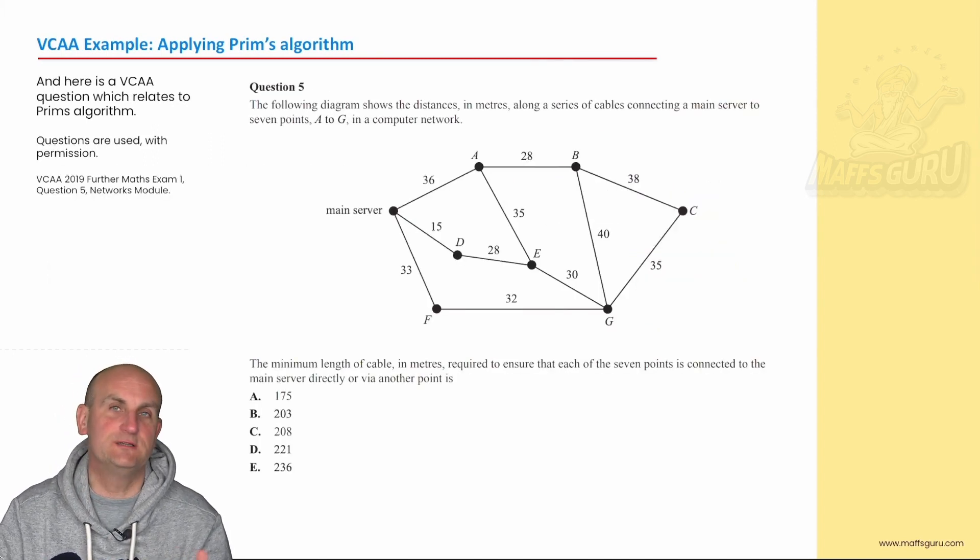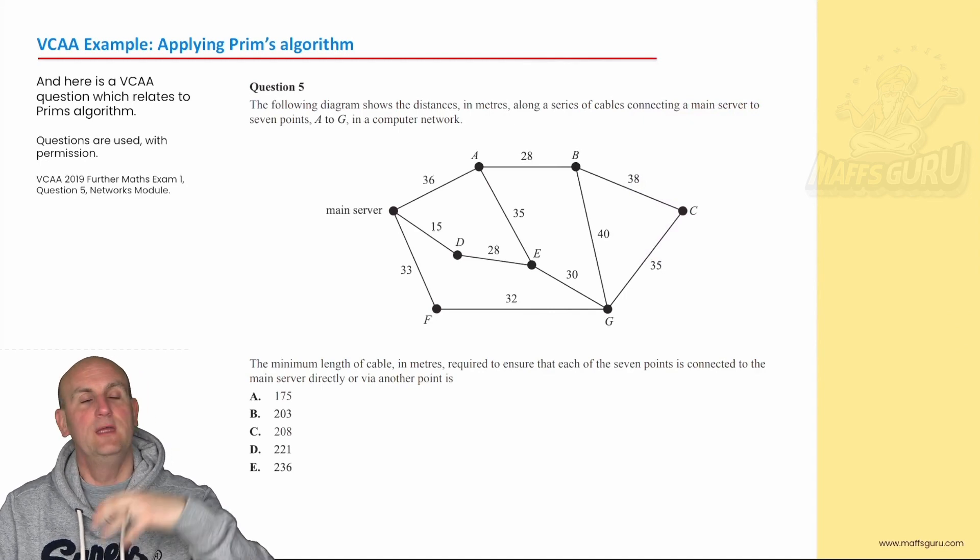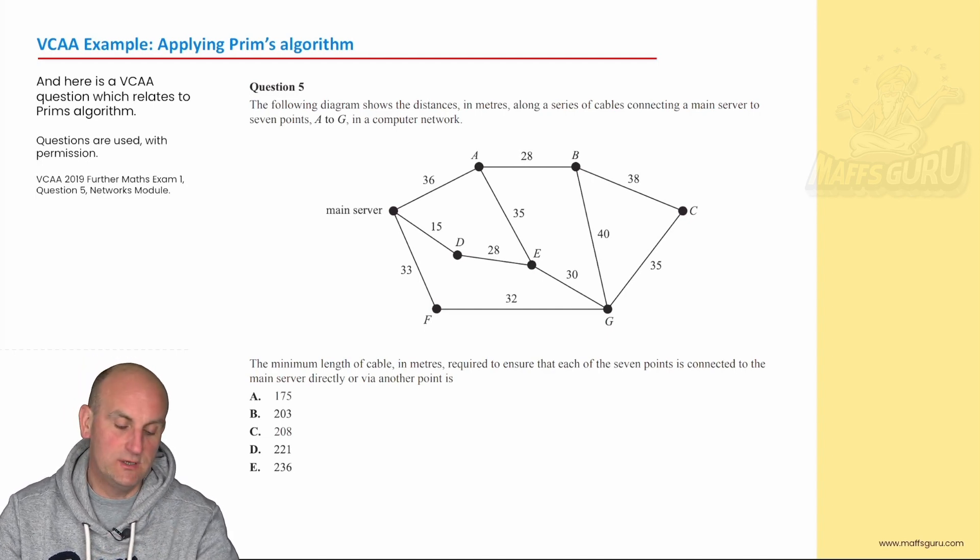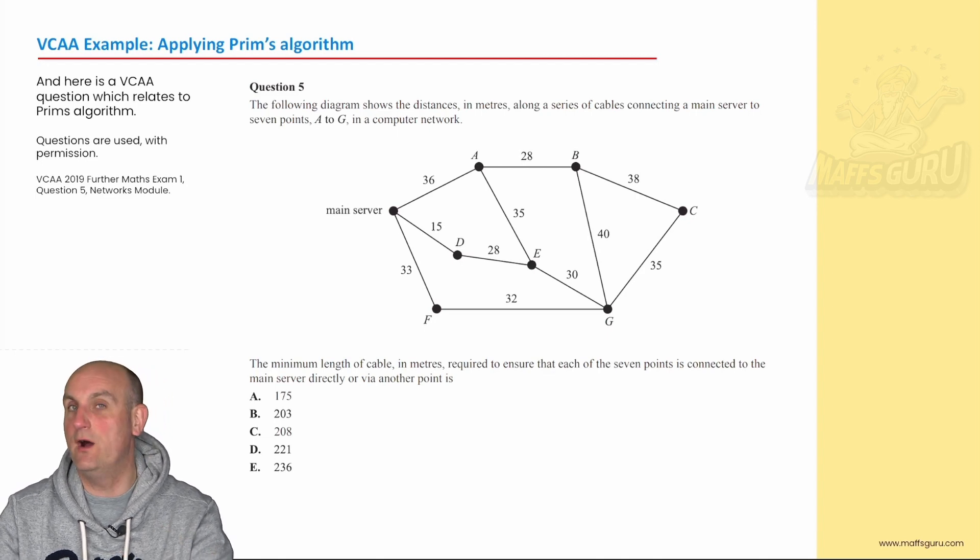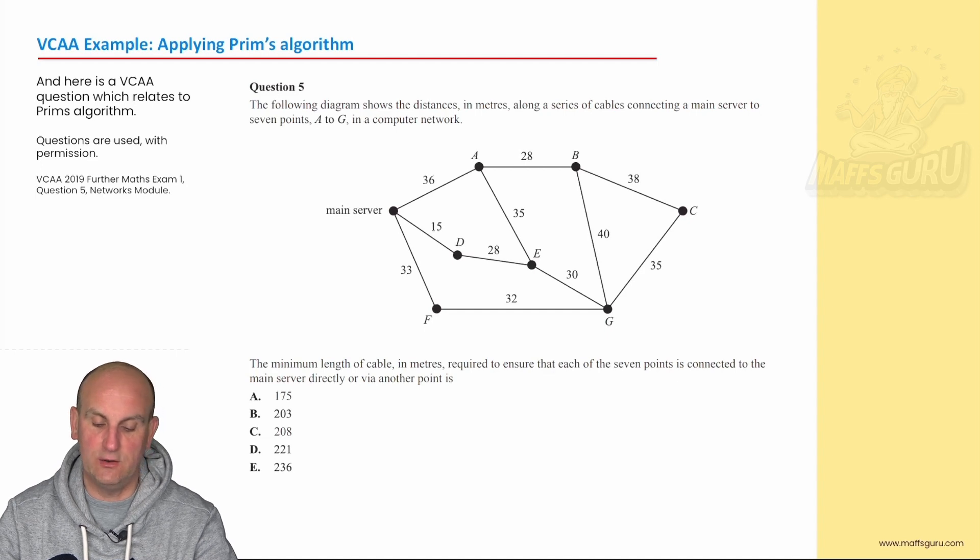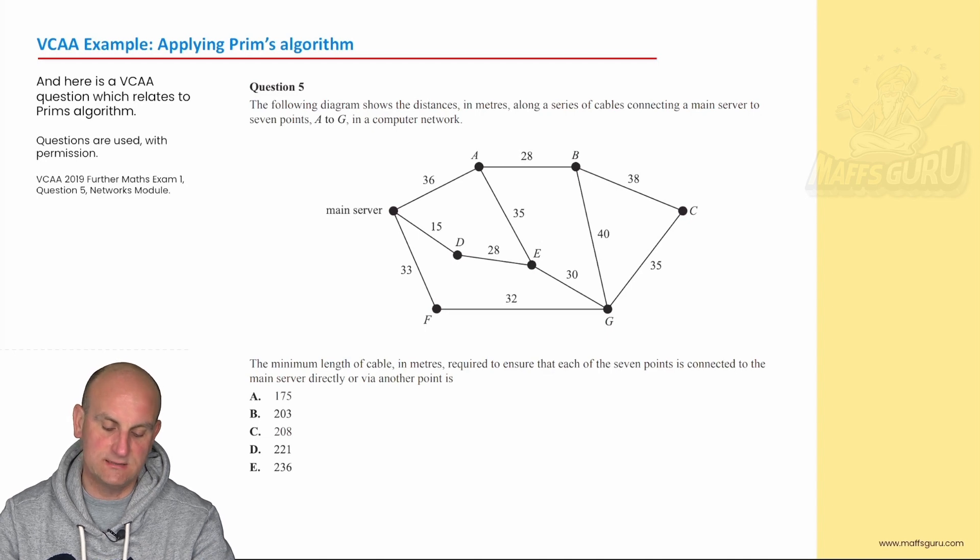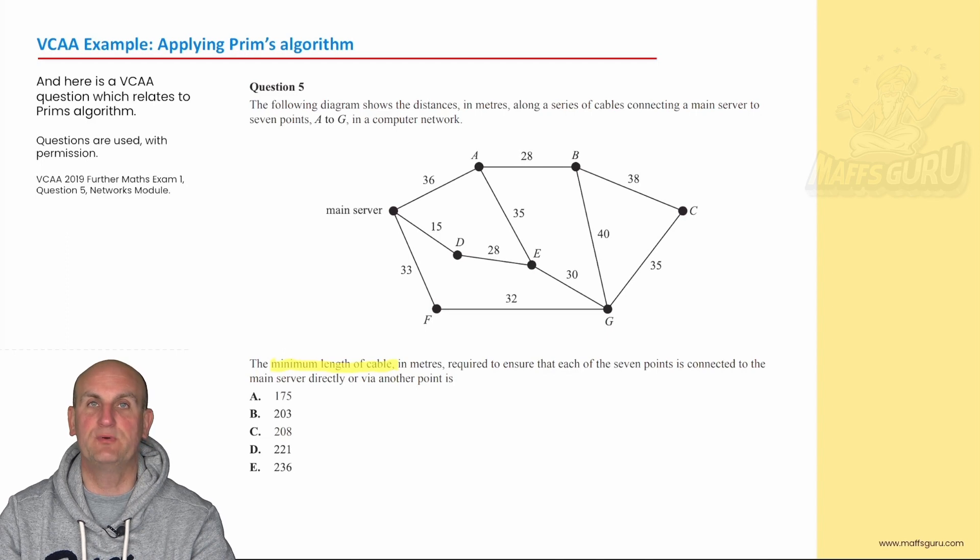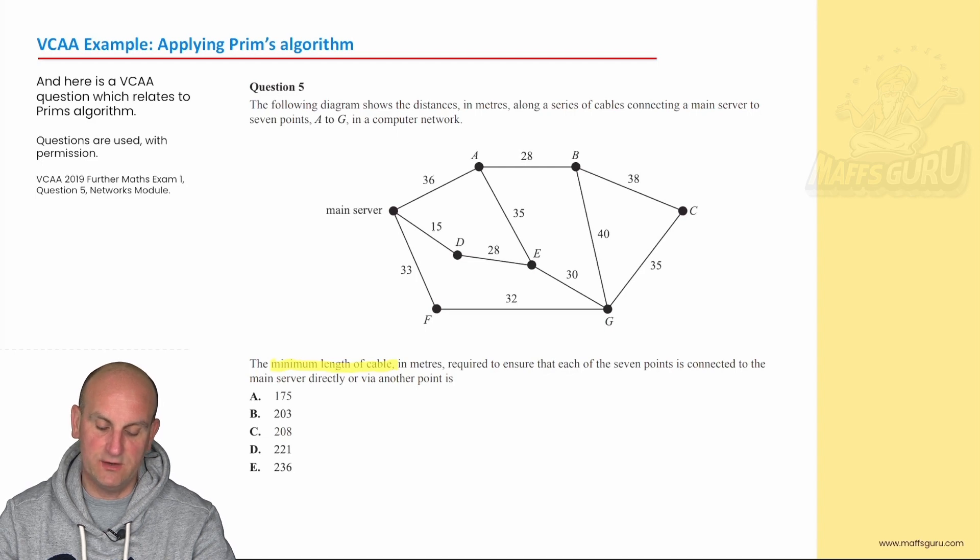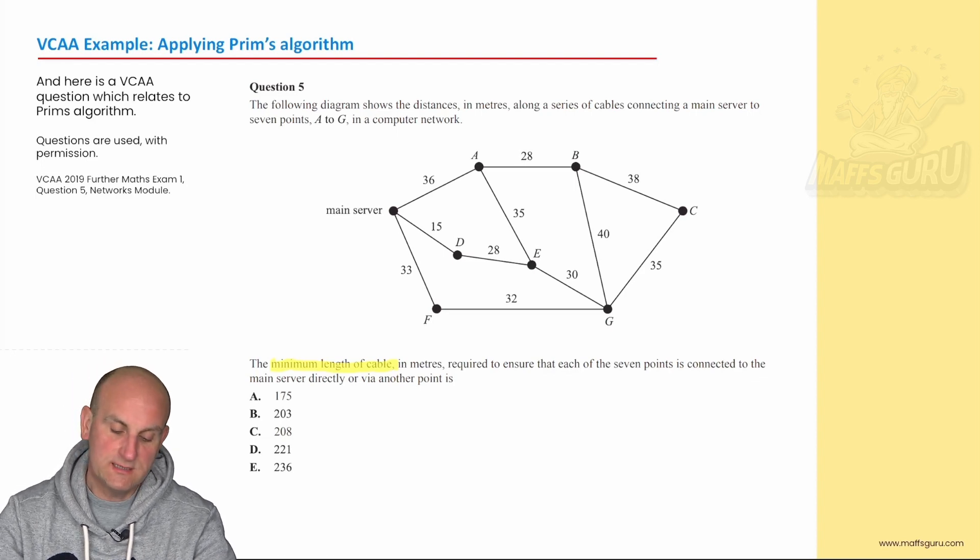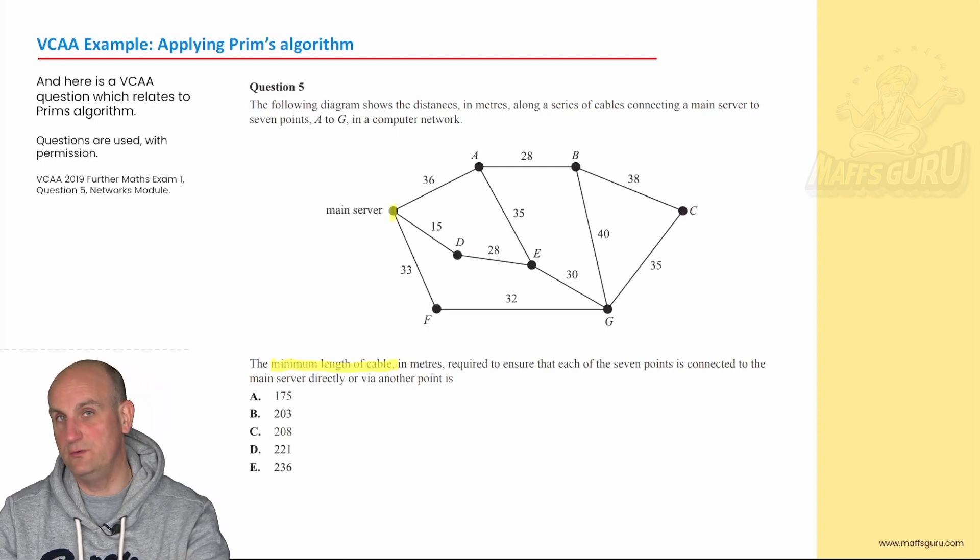Now, I wouldn't normally do VCAA questions this early in the general maths course, but because this is such an important topic, I thought I'd pull a couple of questions in and show you how they can use them. Always good to know what to look forward to. And here is a question from, what does that say? 2019. It was a fairly nice question for Prim's algorithm. The following diagram shows the distances in meters along a series of cables, my mind's already thinking, connecting a main server to seven points A to G in a computer network. The minimum length of cable in meters. So again, whenever I see minimum length of cables, my mind is pre-programmed to go, this is Prim's algorithm.